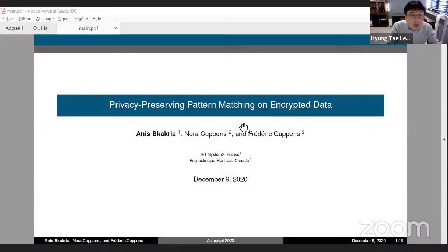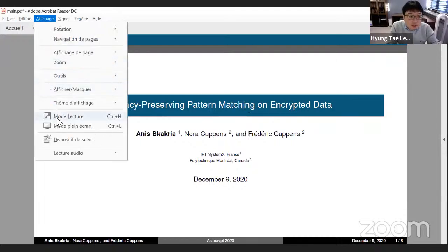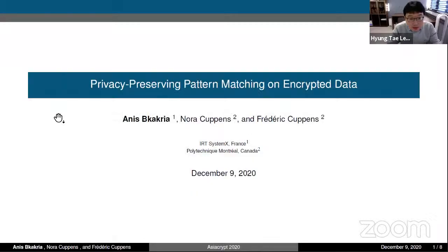The first talk is about privacy preserving pattern matching on encrypted data. The authors are Anis Bukakria, Fredrik Kupens, and Nora Kupens. And the speaker is Anis. Anis, are you ready?